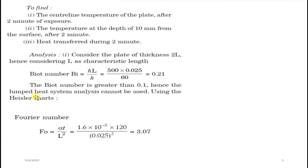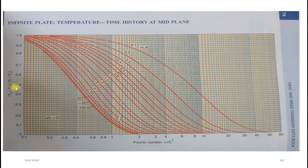For a Biot number of 0.21 and Fourier number of 3.07, referring to the temperature-time history graph for a plate, we locate these points and read the y-axis value: (Tc − T∞)/(Ti − T∞) = 0.58.